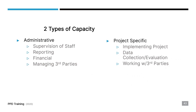The first one is administrative. You want to make sure that you have staff on your project who have experience supervising other staff people — somebody in charge making sure that people are on point and completing the activities that are assigned to them.